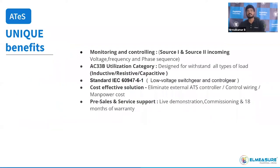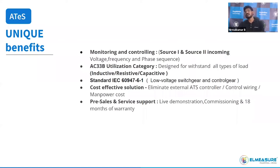A unique benefit is monitoring and controlling for both source one and source two — voltage protection, frequency protection, and phase-sequence protection. While competitors focus only on controlling, our ATS includes monitoring via a remote display where you can monitor incoming three-phase voltage and frequency. Optional current monitoring is also available, eliminating the need for an external multifunction meter. All protection and monitoring devices are in-built.